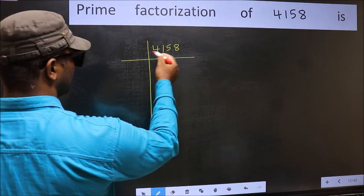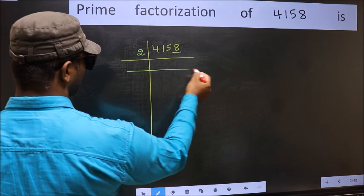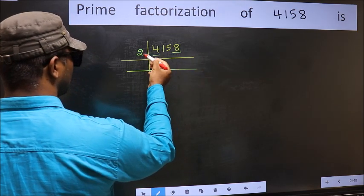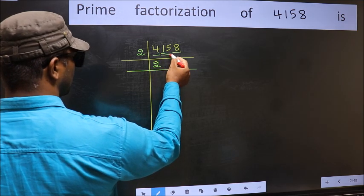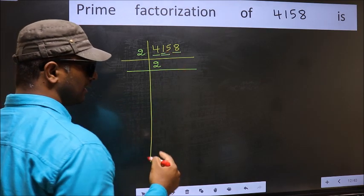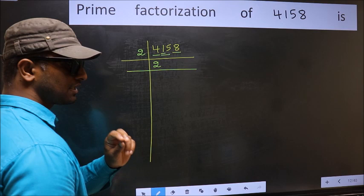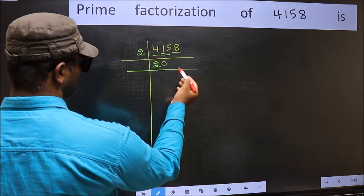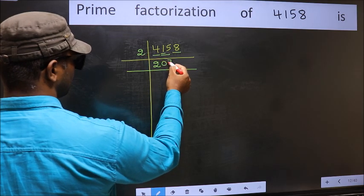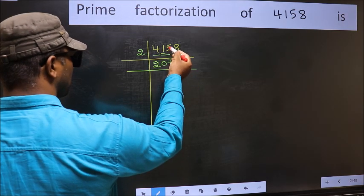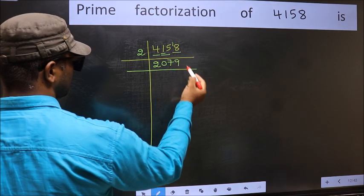In this number, the last digit is 8, so take 2. First number 4 — when do we get 4 in the 2 table? 2 twos are 4. The other number is 1, smaller than 2, so take 2 numbers: 15. Always remember, whenever you are taking 2 numbers, compulsory put 0. Now 15 — a number close to 15 in the 2 table is 2 sevens: 14. 15 minus 14 is 1, carried forward: 18. When do we get 18 in the 2 table? 2 nines: 18.